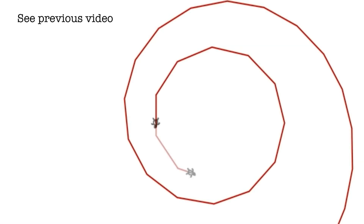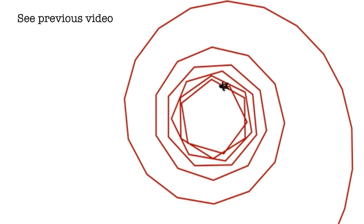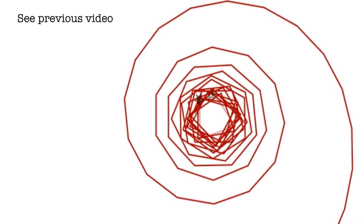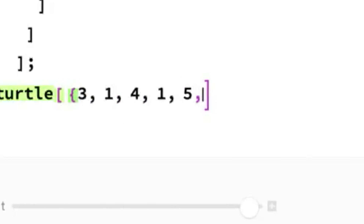Here we have our original thing where we started exploring the Euler spiral. What if I just start sending the digits of pi?